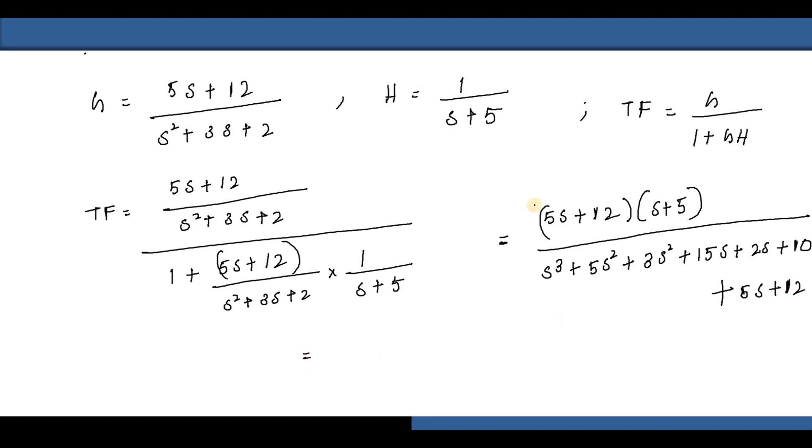We reduce this to (5s²+37s+60)/(s³+8s²+22s+22). This is the closed loop transfer function of the system.